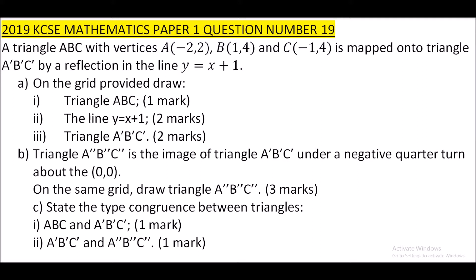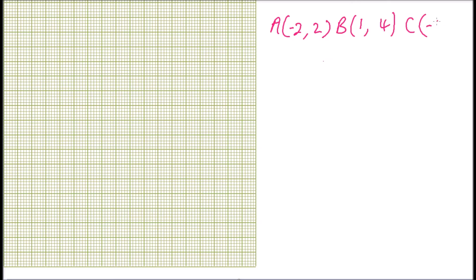To do this, we are provided with a grid. We need to draw the line y = x + 1 and the two triangles. We start by setting up the coordinate axes. This is 1, 2, 3, 4, 5, 6 along the x-axis, and 1, 2, 3, 4, 5, 6 along the y-axis.